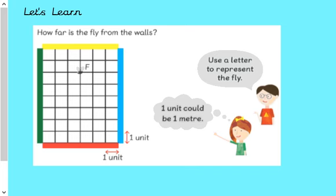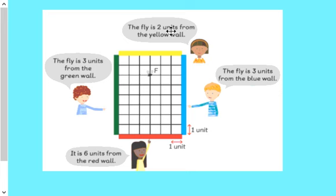Okay, let's learn. So, how far is the fly from the walls? Well, if we were to grid the ceiling up, okay, we can divide it up into squares. And what we're going to do is think about, you know, for this position of the fly, we're going to give it a letter that could represent that fly. So, we're going to call it F, F for fly. And if we said that each of these squares was one meter, then we could try and describe exactly where the fly is from these walls. So, we could say that the fly would be two units from the yellow wall or two meters from the yellow wall. We could say that the fly is three meters or three meters from the blue wall.